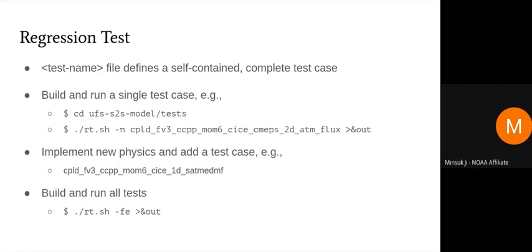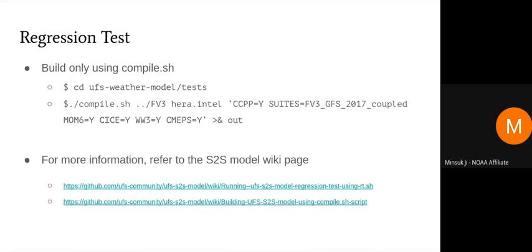If you're a developer implementing new physics, you need to add a test case that goes with your development and add similar test name files. As a starting point, look at the other test name files in UFS S2S model slash test slash test. If you want to build and run all tests, since there are so many, it takes a long time — we have workflow managers such as EC flow and recorder managers that you can use to shorten the computational time.